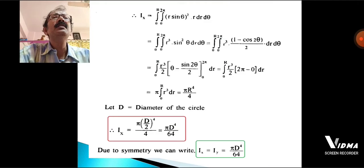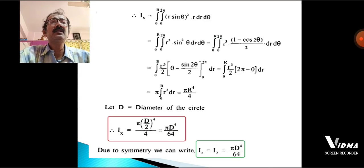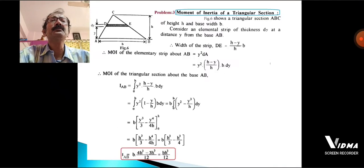Due to circular symmetry about both the x-axis and y-axis, Ix = Iy = πd⁴/64.